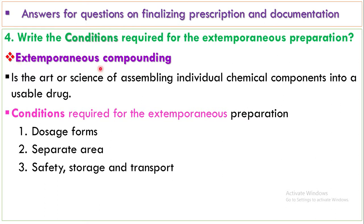The fourth question asks: what are the conditions required for extemporaneous preparation? First, let's define extemporaneous preparation. Extemporaneous preparation is the art or science of assembling individual chemical components into a usable drug. The conditions used for extemporaneous compounding are: the first is dosage form, the second is a separate area, and the third is safety, storage, and transport of the drug.